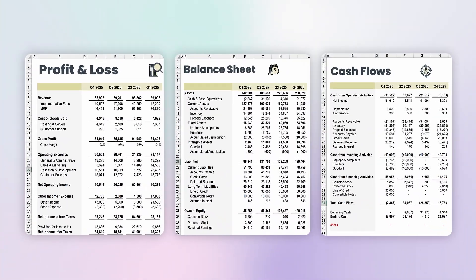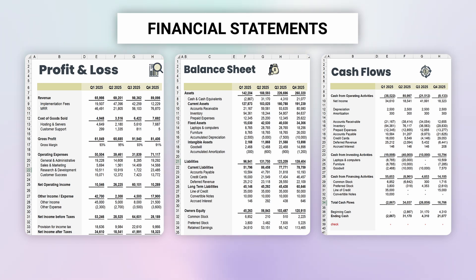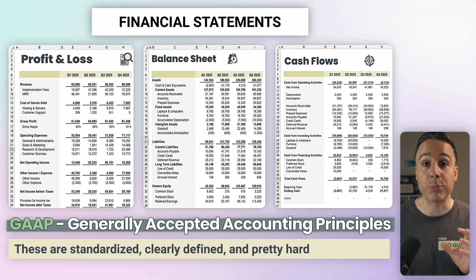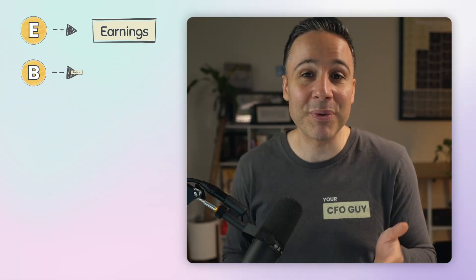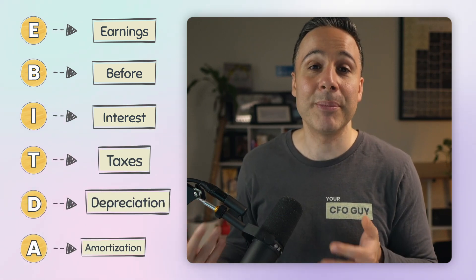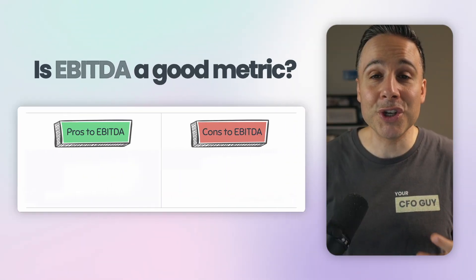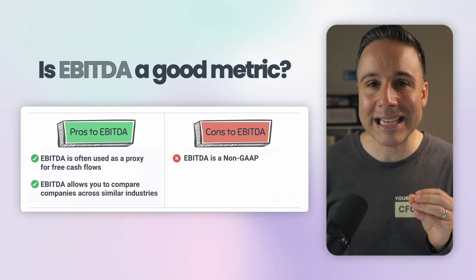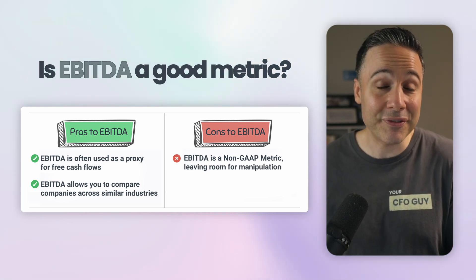This final analysis may be the toughest, but it can be worth it. So far we've been working with metrics you can pull straight from your financial statements — things built using GAAP, or generally accepted accounting principles. These are standardized, clearly defined, and pretty hard to manipulate. But non-GAAP metrics, that's a whole different game. Take EBITDA, for example: earnings before interest, taxes, depreciation, and amortization. People love EBITDA because it's often used as a rough proxy for free cash flows, and it helps compare businesses within the same industries. But because it's non-GAAP, it's not standardized — companies can define it pretty much however they want, which opens the door for manipulation. And EBITDA is really just the tip of the iceberg.